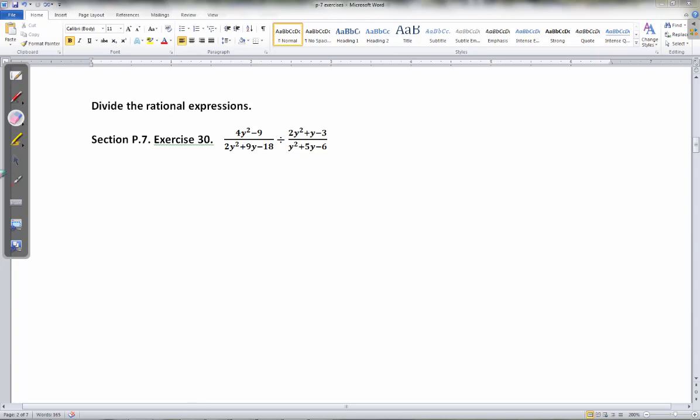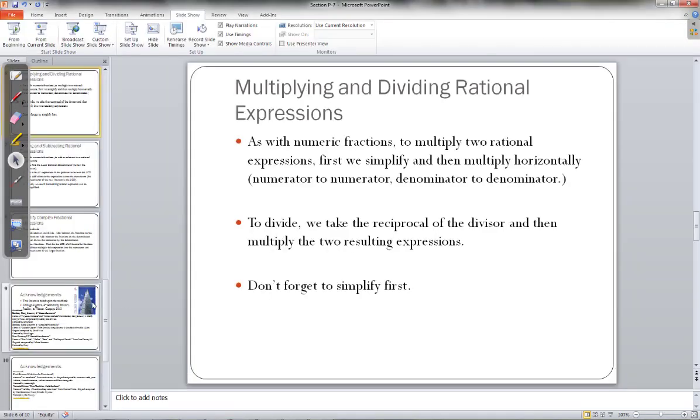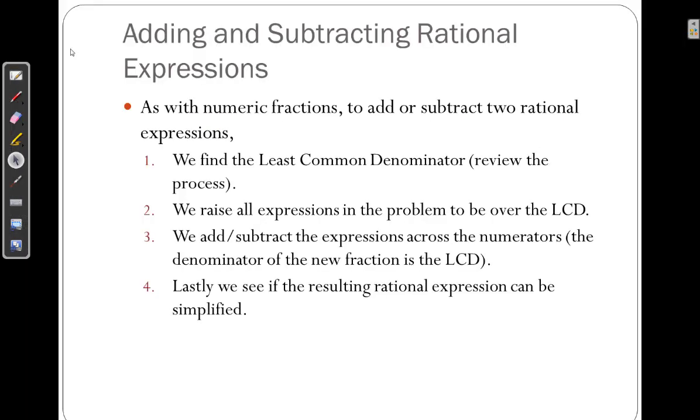So at this point, we've talked about multiplication. We've talked about division. Now it's time to talk about addition and subtraction. When you're adding and subtracting numeric fractions, the first thing you always have to do is find the least common denominator. No different here. Still got to find a least common denominator among all our rational expressions. Once we find that, we raise all of our rational expressions, all of our fractions, to be over that LCD. Then we can add and subtract the fractions across the numerators. And don't forget, you should check to see if you can simplify at the end.